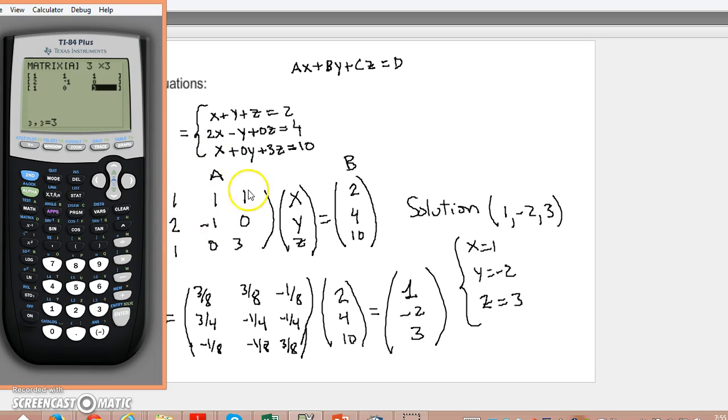So I inputed matrix A there. And now I'm going to input matrix B. So I'm going to matrix menu again, I'm going to edit. I already have a 3x1 matrix there, so I'm going to input 2, 4, and 10.